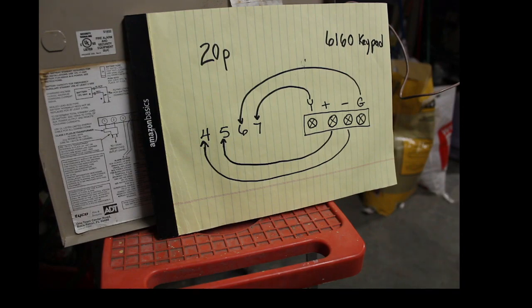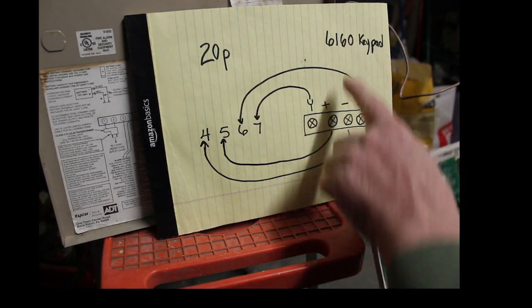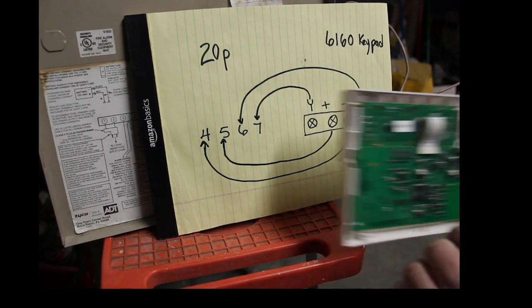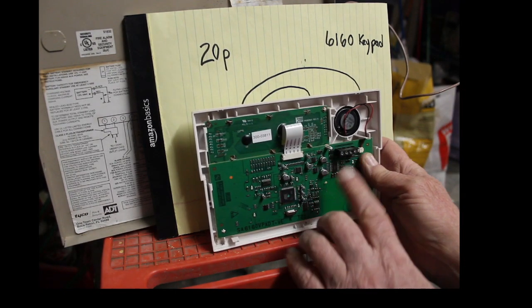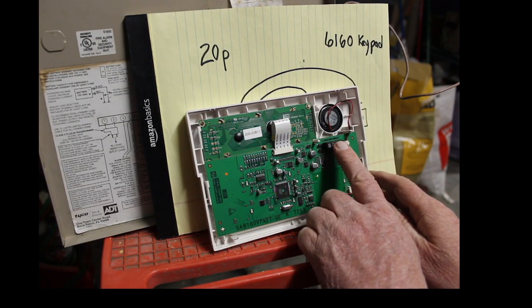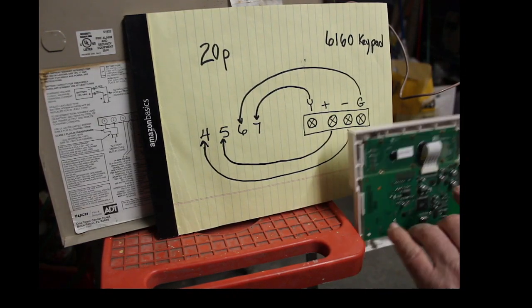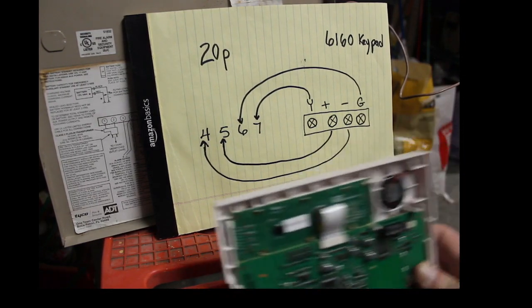So this is how you wire in the keypad. Alright, so this is the keypad right here and that is the same as this terminal strip. If you're looking at the keypad just like this, your terminal strip is right here, this is pointing up.